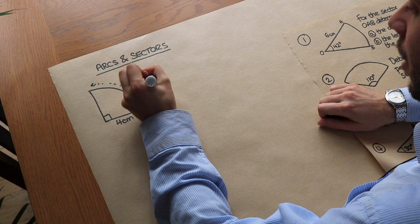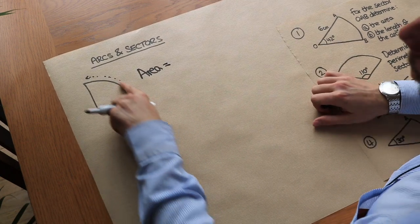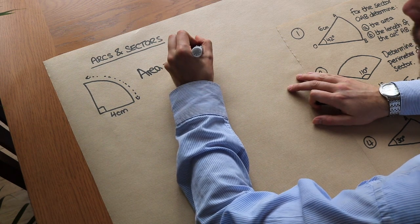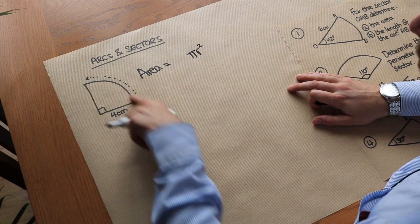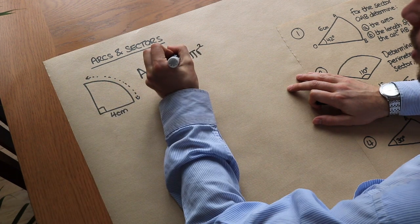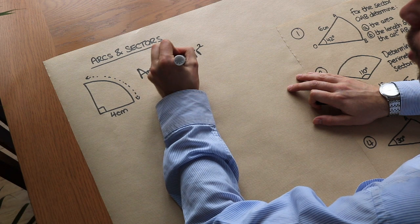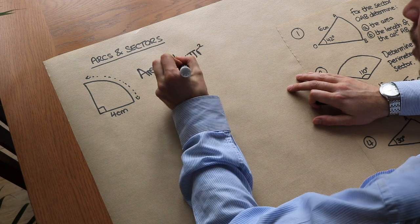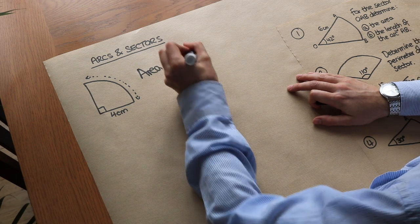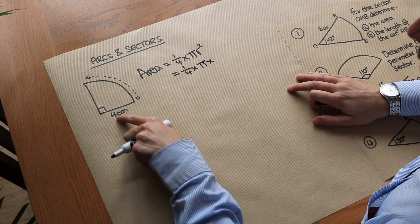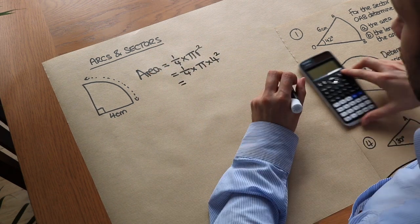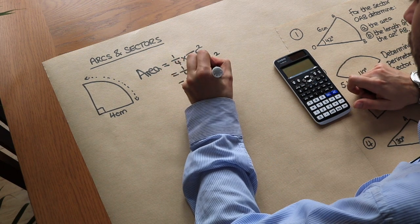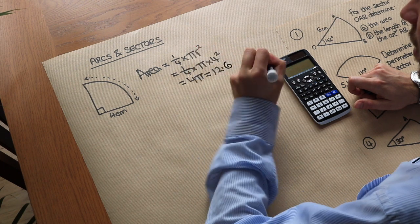To find the area, we could find the area of the full circle, which is pi r squared. But what fraction of a full circle do we have? We just have a quarter of it, so we're going to multiply it by a quarter, giving us a quarter of pi r squared. For this particular circle, that's a quarter times pi times 4 squared, which gives us 4 pi, or as a decimal, 12.6 centimeters squared.